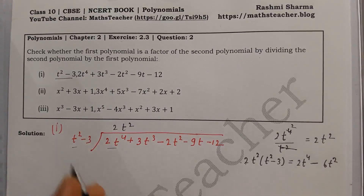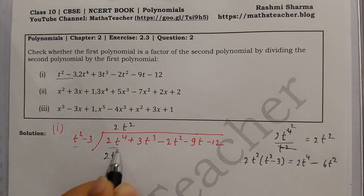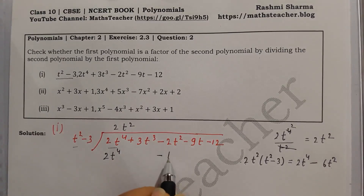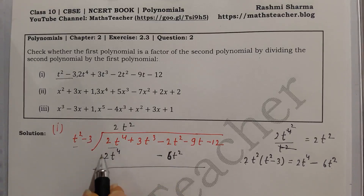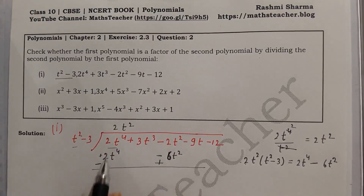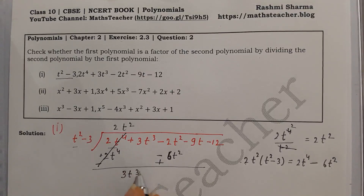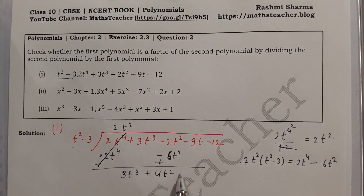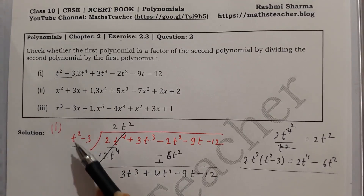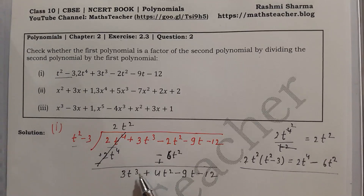We write the terms according to degree. After subtracting, sign changes: plus becomes minus. The 2t⁴ terms cancel. We arrange the remaining terms by degree — 3t³ comes first, followed by the remaining terms. We bring down and continue.